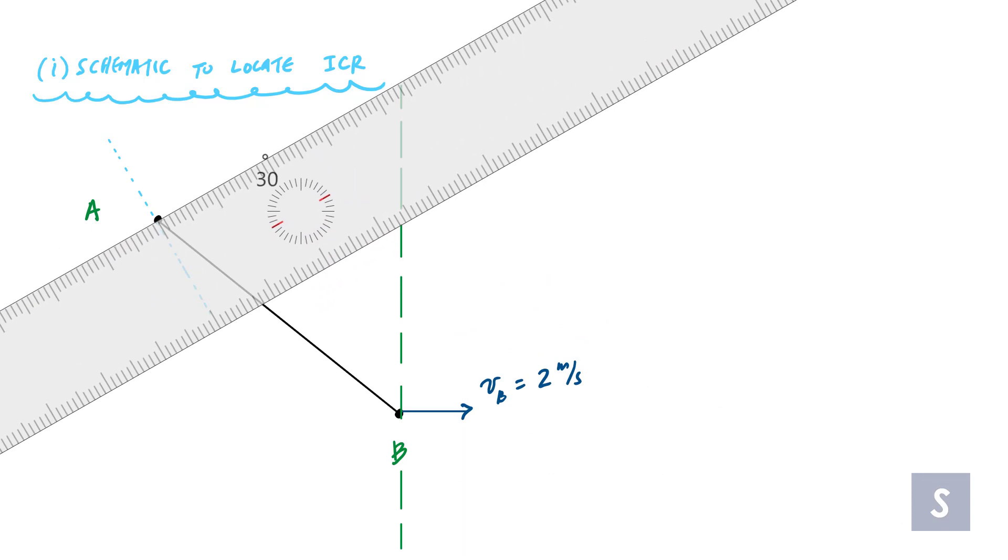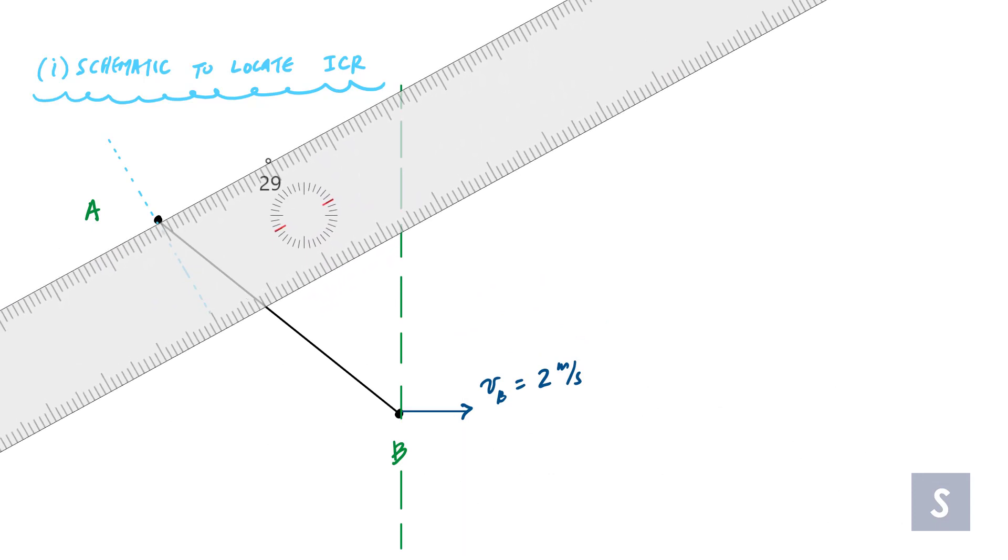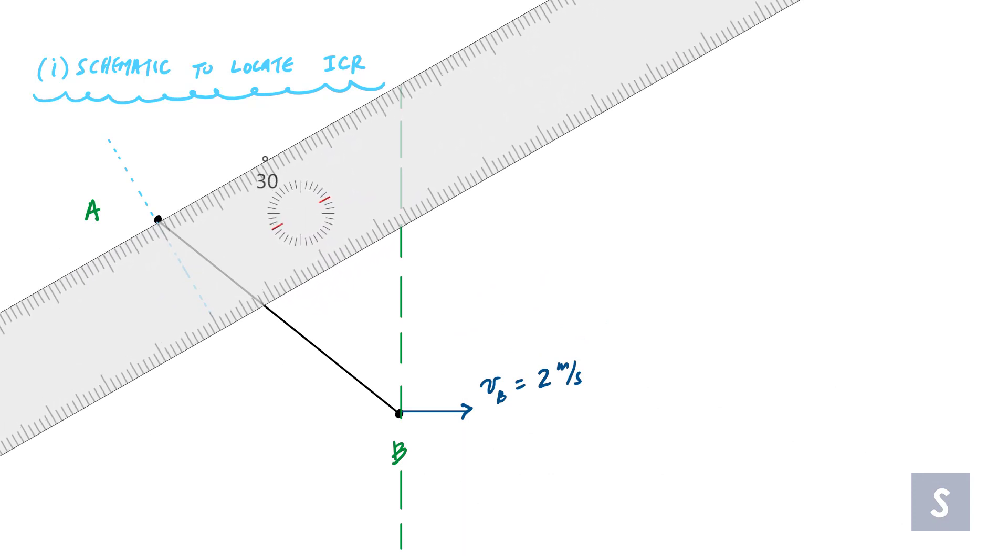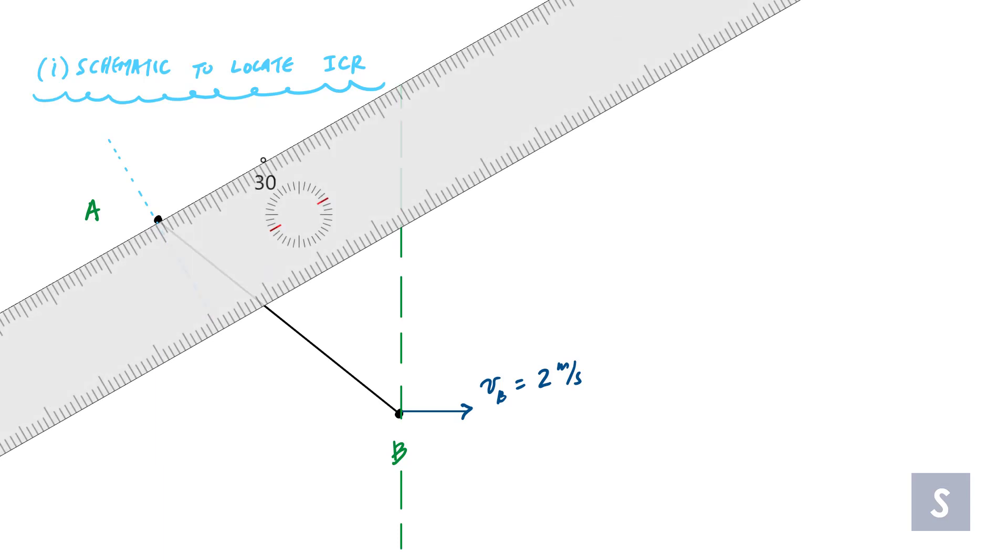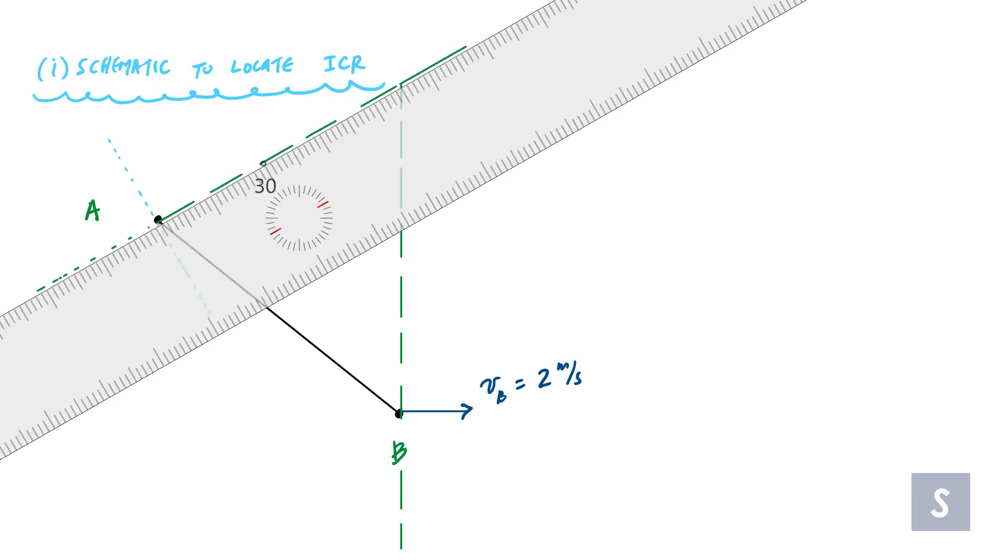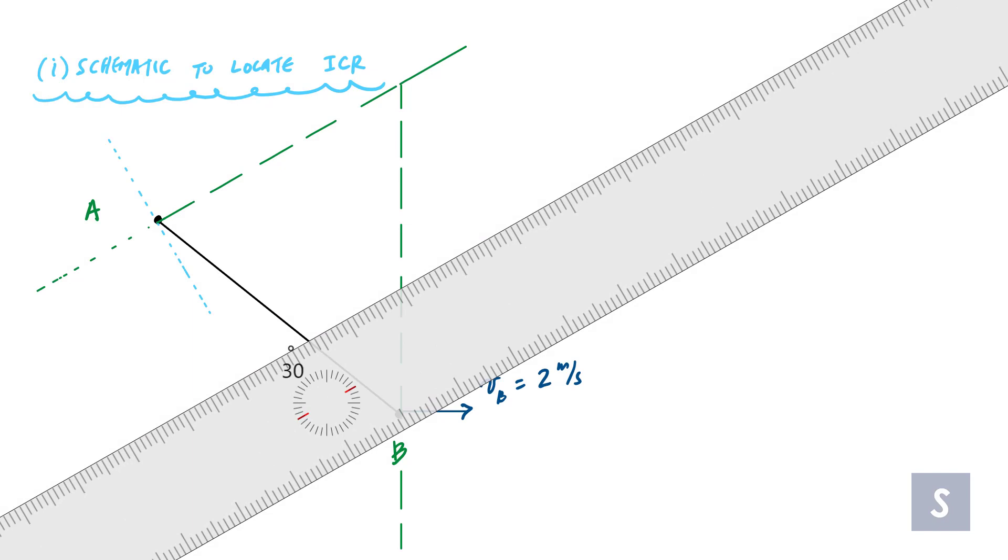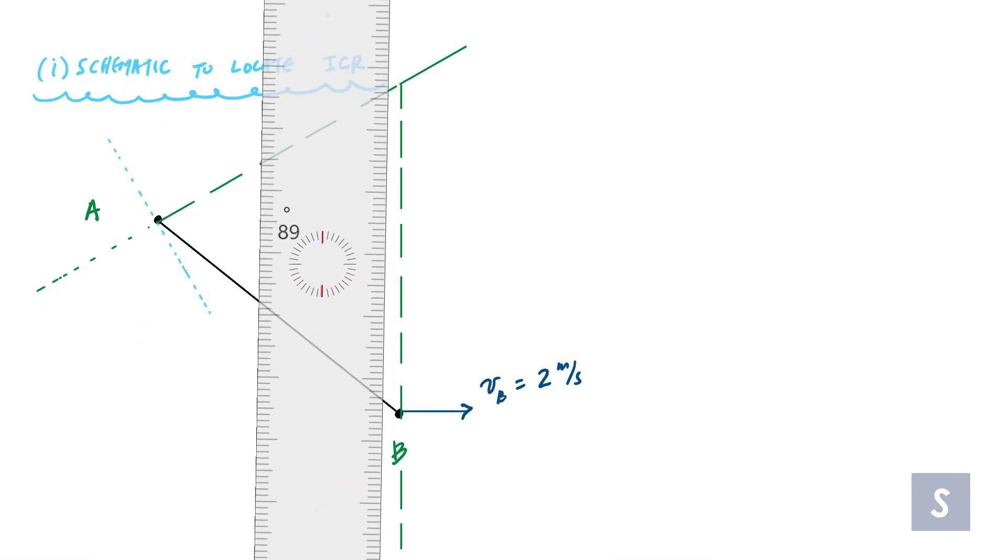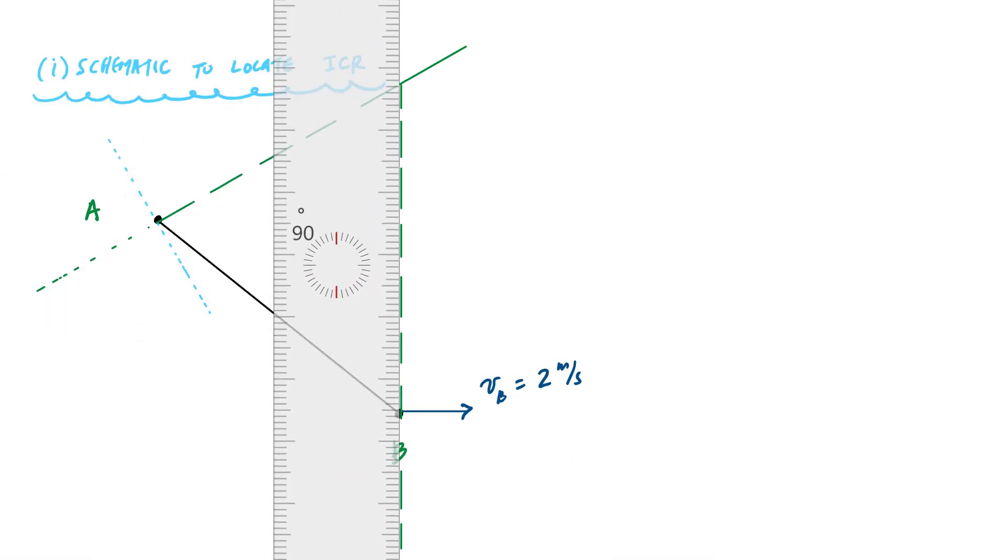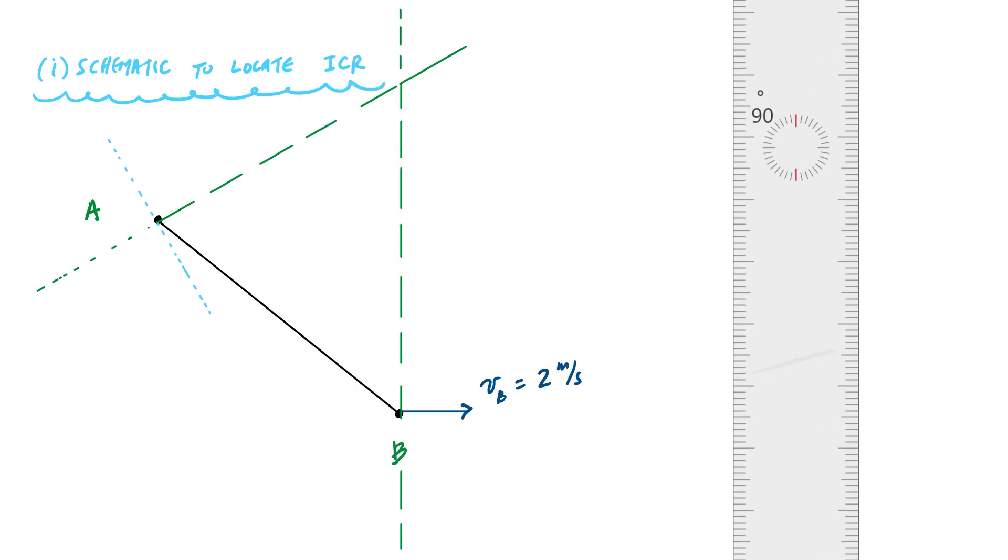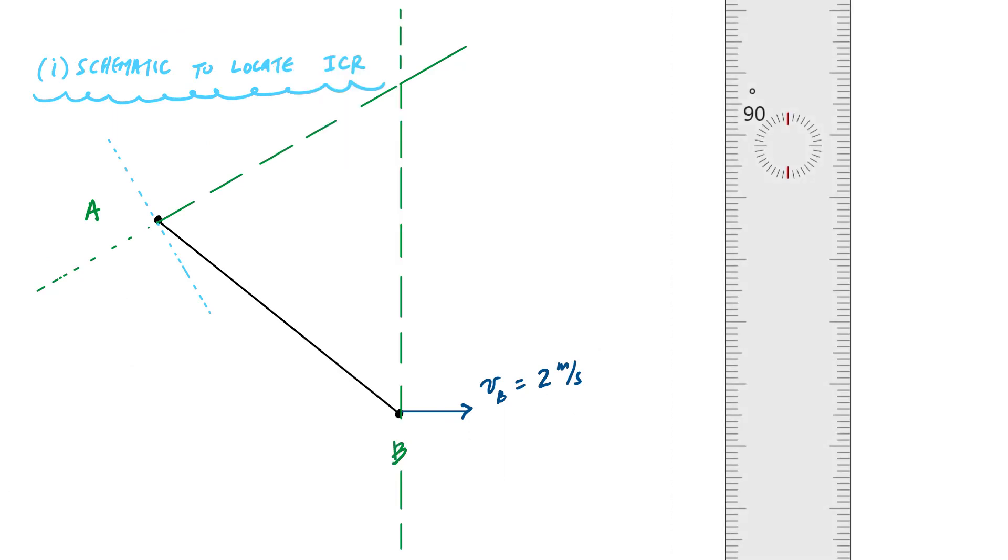There's my line perpendicular to VB. And then in the same way, I'm going to draw a line perpendicular to A. With this ruler, I get to draw some accurate lines. The power of an accurate drawing is so good right here. So this is my line perpendicular to the velocity vector here at A. And I totally lucked out in that intersection. Right here, where the two lines intersect, this is my instantaneous center of rotation.